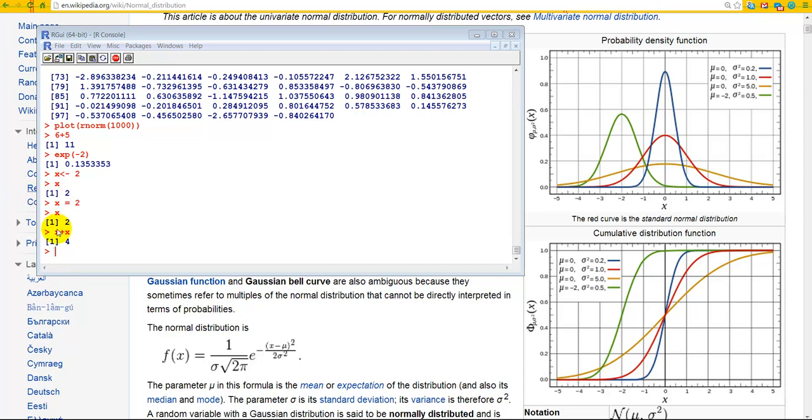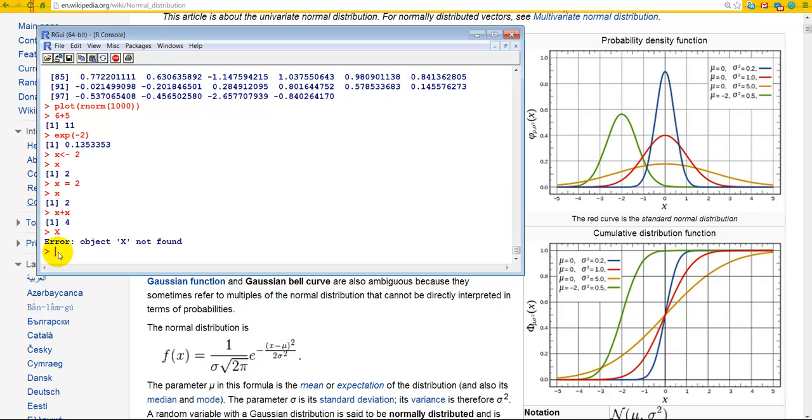Now, one thing about R is that you can name a variable x, you can name it y, you can name it all kinds of things, but you shouldn't start the name with a number. And you shouldn't start it with a period either. And also, names are case sensitive. So if I type capital X now, it's not going to be 2. In fact, it doesn't even exist. So small x and capital X would be different. So it's case sensitive.